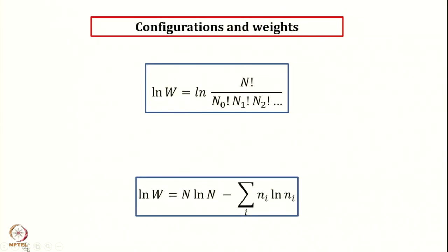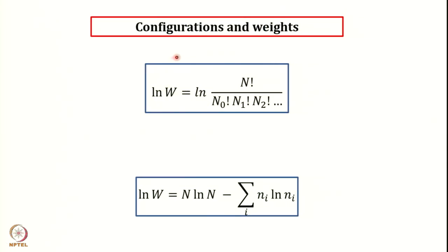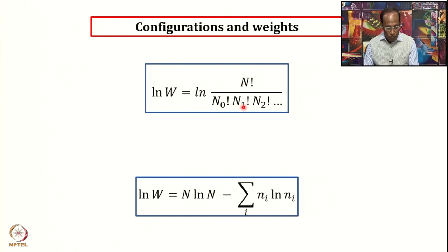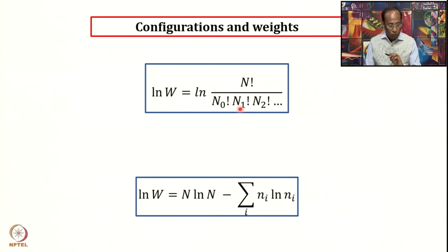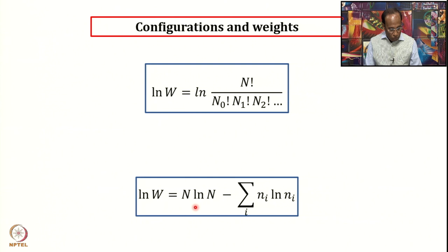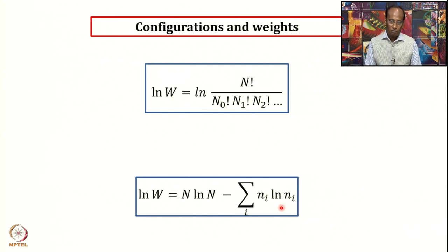Yesterday we talked about the formula that in order to calculate the weight of a configuration, W is equal to N factorial over n0 factorial, n1 factorial, n2 factorial, and so on. But if you notice, here I have written the logarithm of W. My aim today is to start with the definition of statistical weight and arrive at the equation: log W = N log N − Σ ni log ni. A question may come to mind: why are we working with log W?